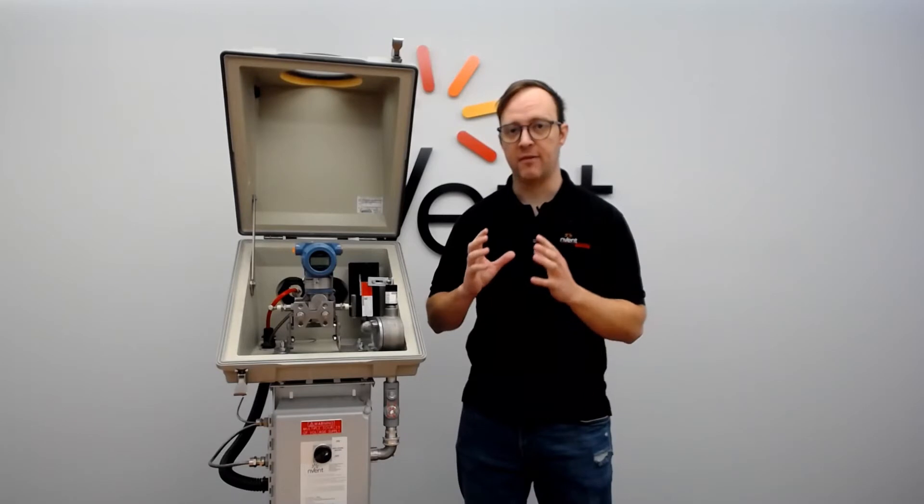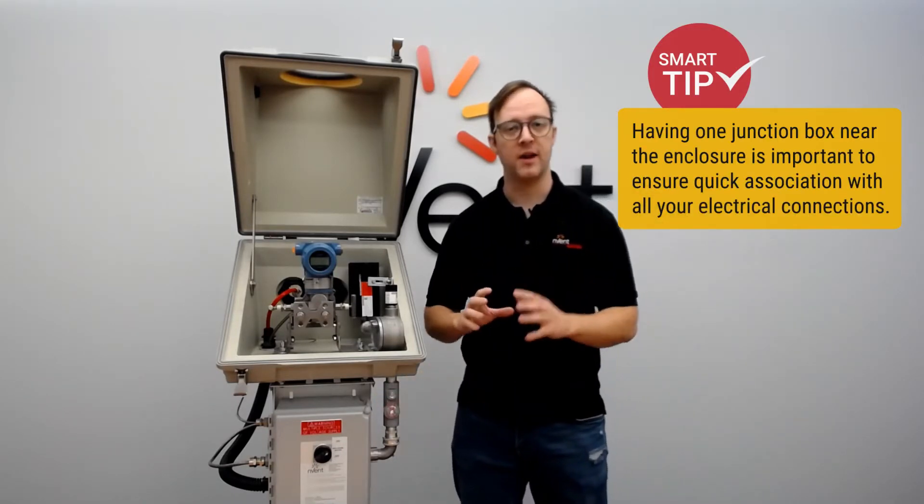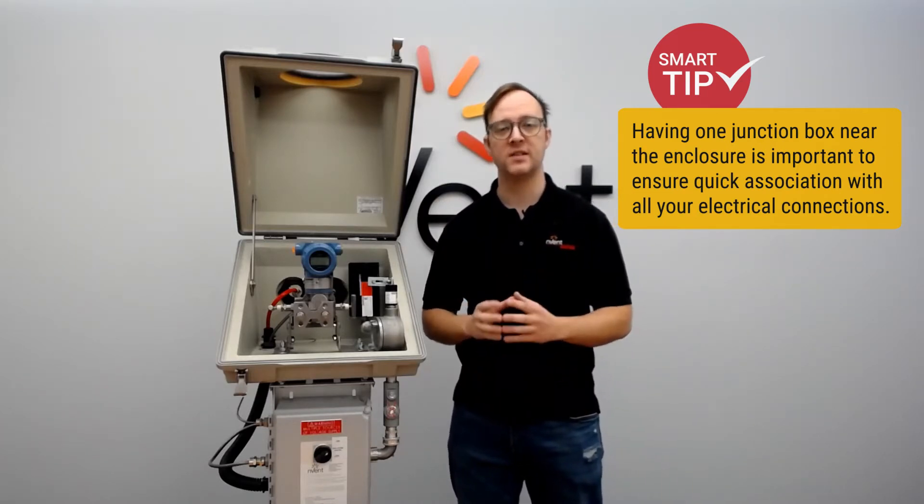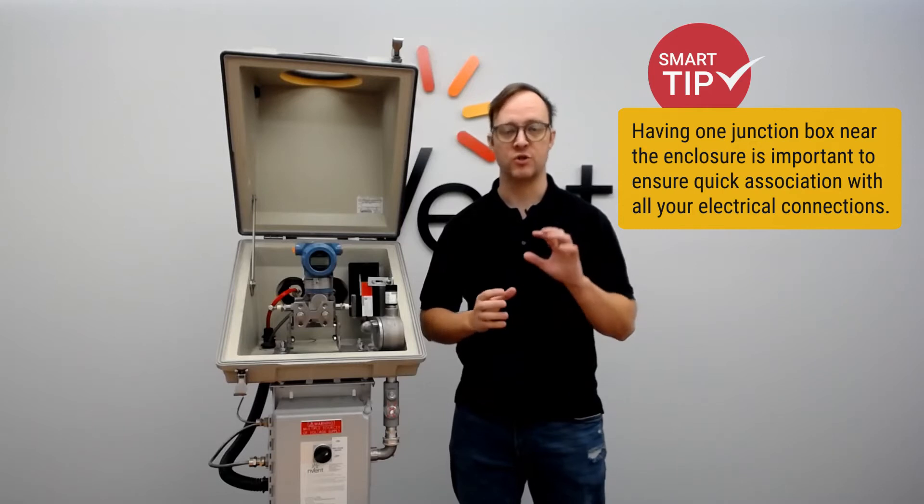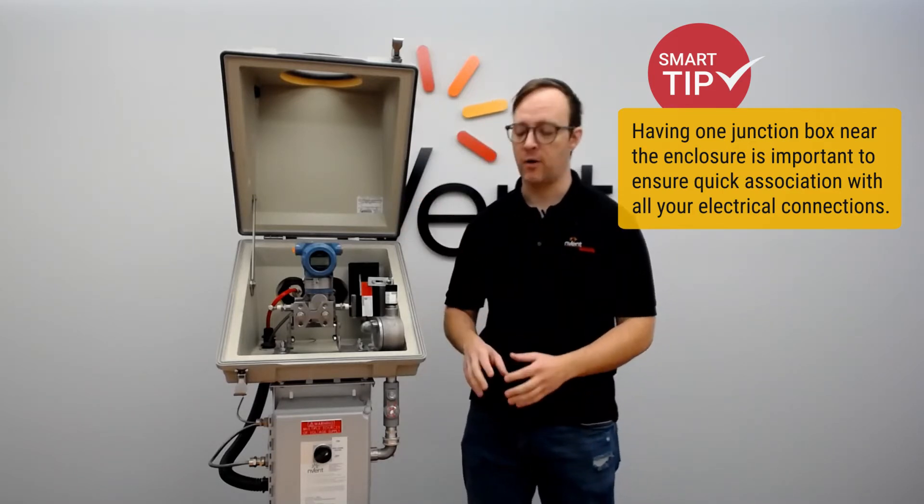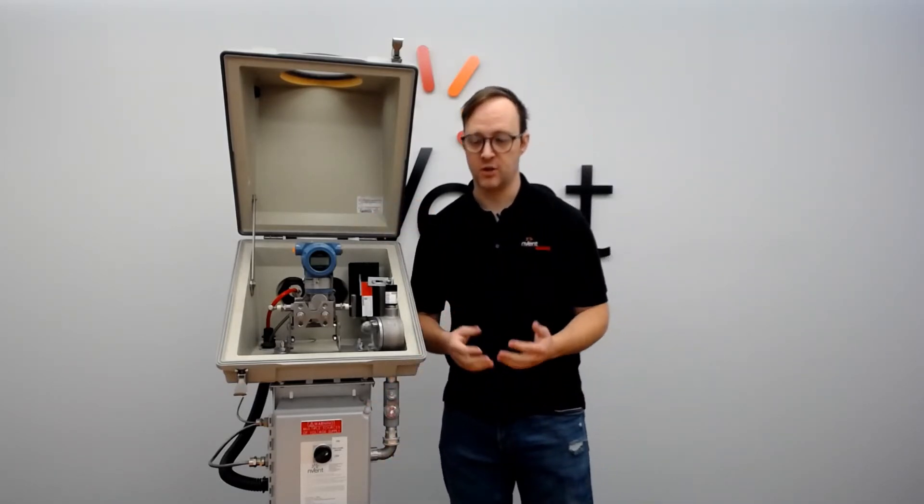We believe that having one single junction box as shown here is much better than having a variety of different junction boxes around your plant. That ensures you're not wasting time looking for a junction box for electric heat trace, RTDs, or heater power, and that it's located very close to the winterized enclosure for quick association.